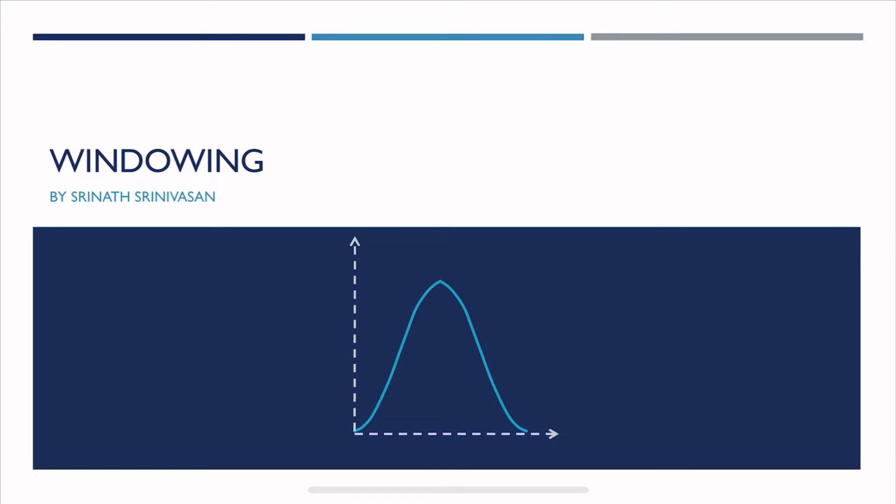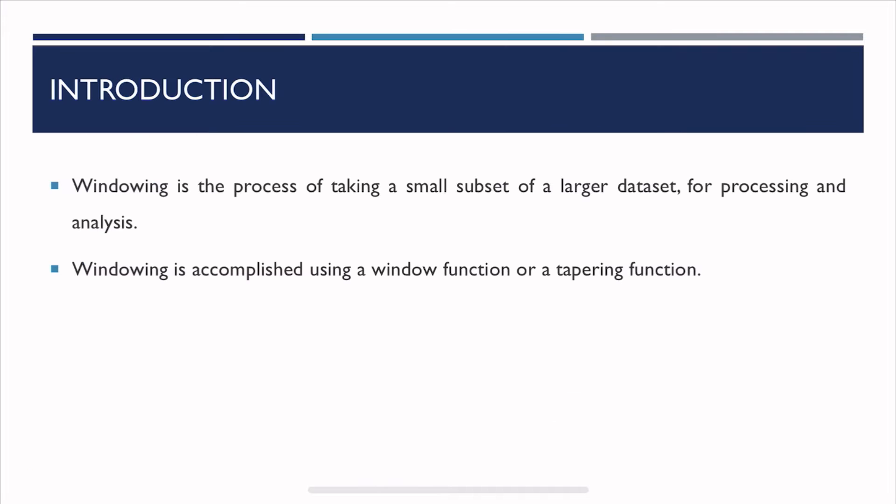Hello everybody. Today I'll explain what is windowing. Windowing is a process of taking a small subset of a larger data set for processing and analysis. Windowing is accomplished using a window function or a tapering function.